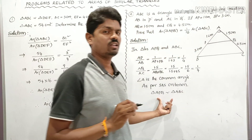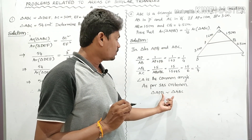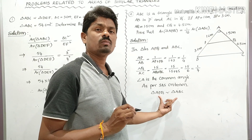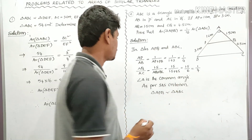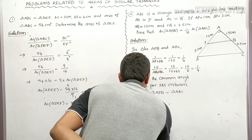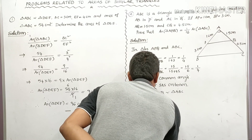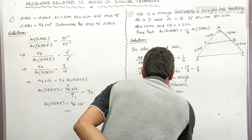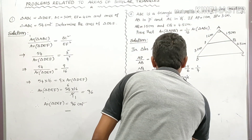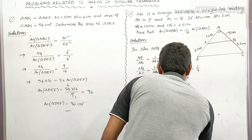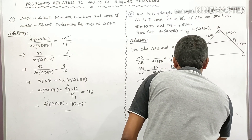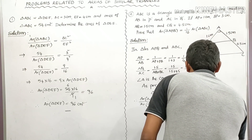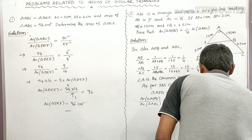Now we can apply the statements of areas of similar triangles. Since triangle APQ is similar to triangle ABC, the ratio of the areas of two similar triangles is equal to the ratio of the squares of their corresponding sides. Therefore, area of triangle APQ divided by area of triangle ABC equals AP squared divided by AB squared. AP squared is 1 squared, and AB can be written as AP plus PB, that is (1 plus 3) whole squared, which equals 1 divided by 4 squared, giving 1 by 16.